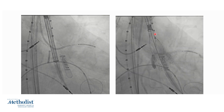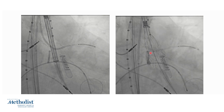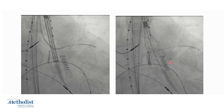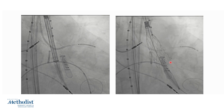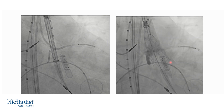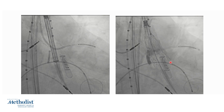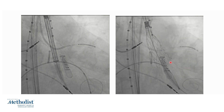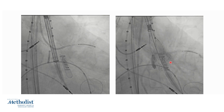We can see that coronary flow is not compromised — there is flow into the coronary artery in this view. As you know, the Evolute platform allows recapture. If there is concern for coronary obstruction or any other positioning issues, we can always recapture and redeploy this valve, making it a very good platform for these cases.